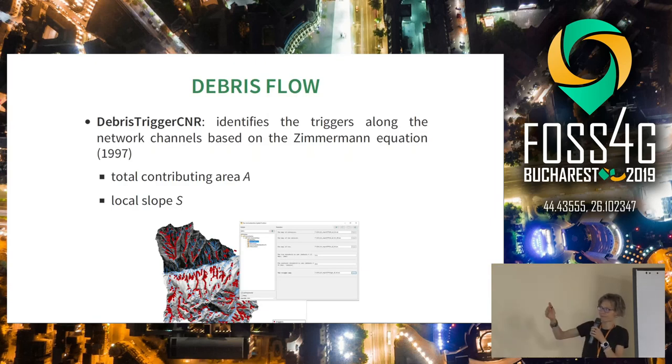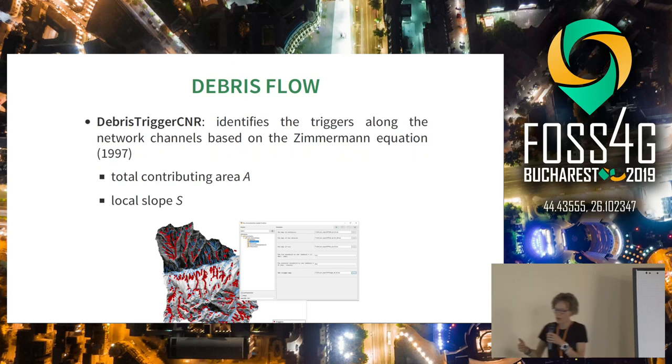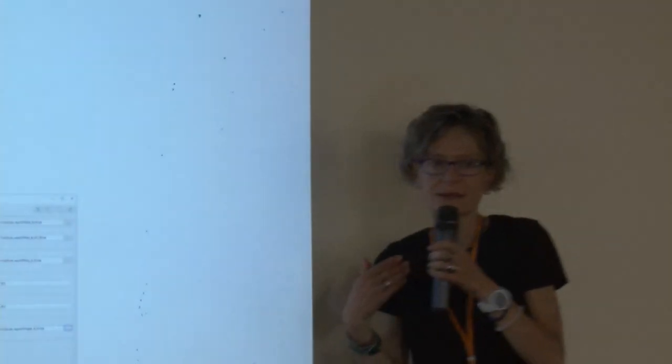The first part is to identify the triggers along the network — where inside the network it is possible that debris flow will start. This is done using the Zimmermann equation, which is based on the total contributing area and the local slope.